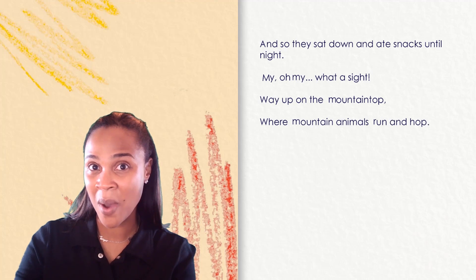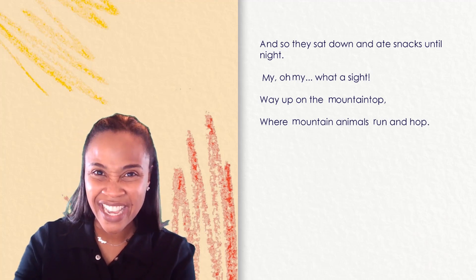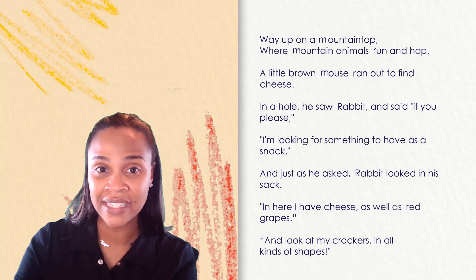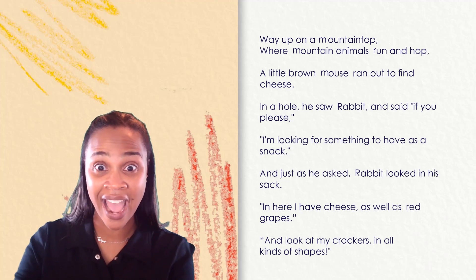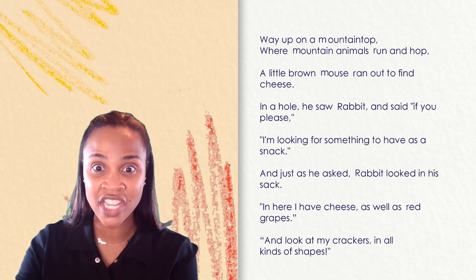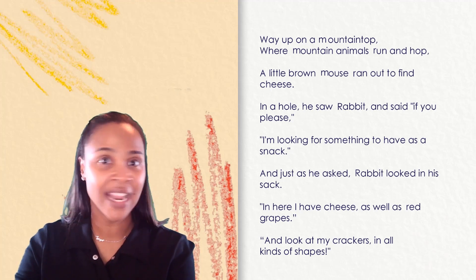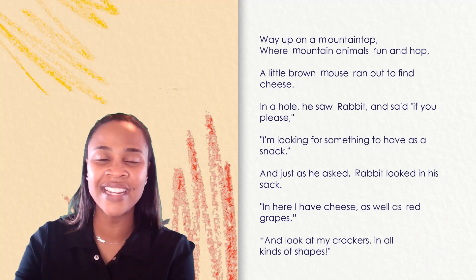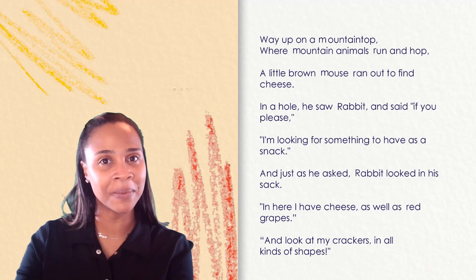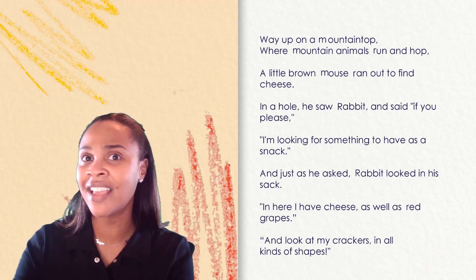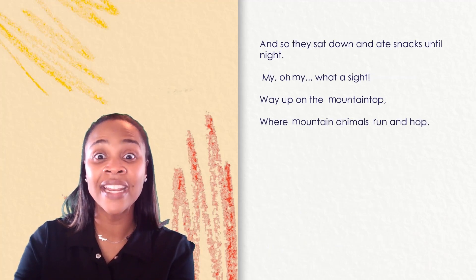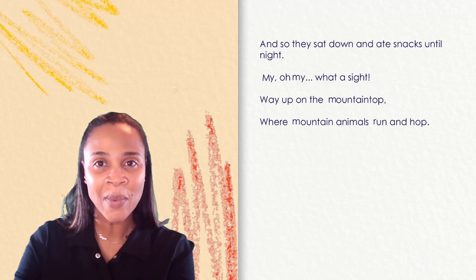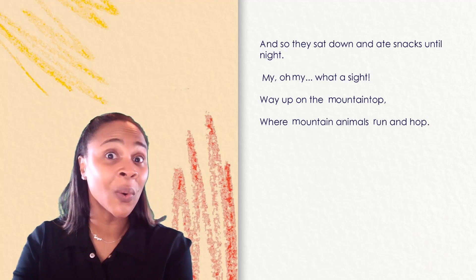Now I'm going to read the poem one more time. Let's look for all those M and R words again. Way up on a mountain top where mountain animals run and hop, a little brown mouse ran out to find cheese. In a hole he saw Rabbit and said if you please, I'm looking for something to have as a snack. And just as he asked, Rabbit looked in his sack. In here I have cheese as well as red grapes. And look at my crackers in all kinds of shapes. And so they sat down and ate snacks until night. My oh my what a sight. Way up on that mountain top where mountain animals run and hop.